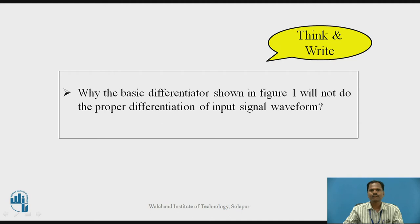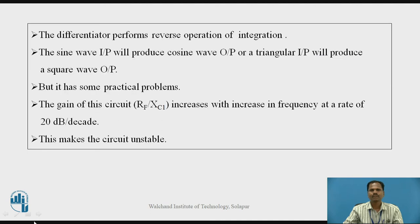The basic differentiator shown in figure 1 will not perform proper differentiation of the input signal waveform. Because the differentiator performs the reverse operation of integration, a sine wave input produces a cosine wave output, or a triangular wave input produces a square wave output. If the input is a square wave signal, the output should be a spike wave signal. However, this basic differentiator has practical problems: the gain of this circuit, that is RF over XC1, increases with increase in frequency at a rate of 20 dB per decade, making the output voltage continuously increase and the circuit unstable.